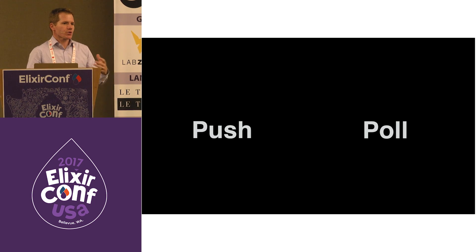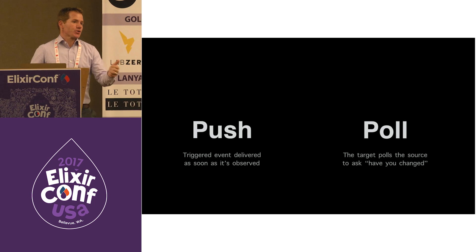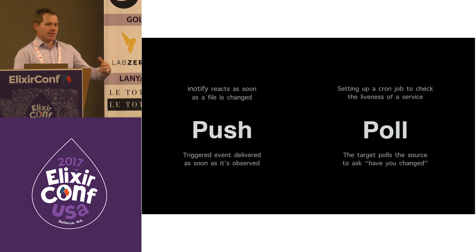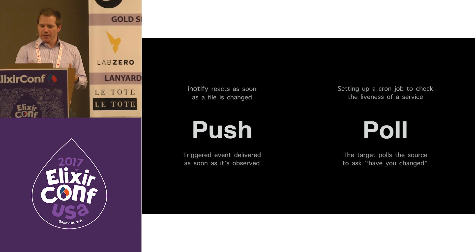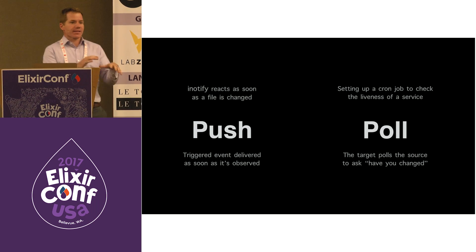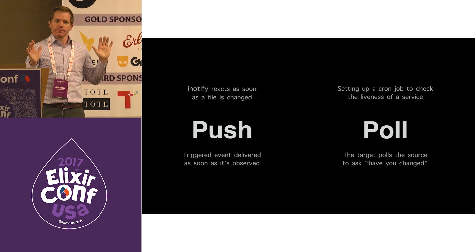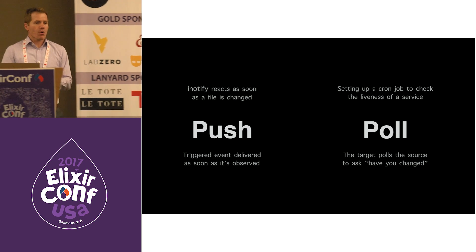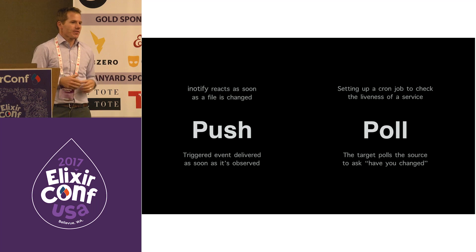When looking at triggers, there are a few dimensions. The first is push versus pull. With push, the event is delivered to you — like iNotify: a file changes, you get notified right away, or an API does a postback. Polling is where you have to ask the question and check for the state change, like a cron job checking for the liveness of a service. One isn't necessarily better than the other. With push, the event comes and if you don't capture it properly, it's gone. With pull, you don't get the event right away — if you're polling every hour and it happens one minute after, you wait 59 minutes.